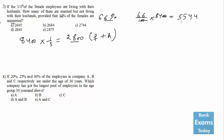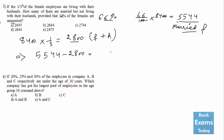The total number of married females is 5544. Either they live with their husband or they don't. So married females not living with their husband = 5544 − 2800 = 2744. So the answer to question 3 is 2744.